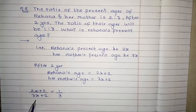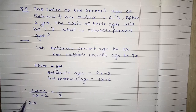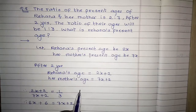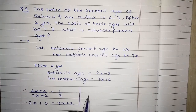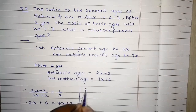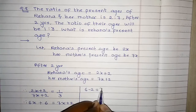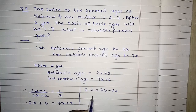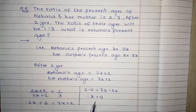Then 3 इधर shift कर देते हैं, 7x plus 2 इधर shift कर देते हैं, तो जाएगा 6x plus 6 equals to 7x plus 2. Then इसे आगे solve करेंगे, 6 minus 2 equals to 7x minus 6x, तो आपको x equals to 4 answer मिलता है।